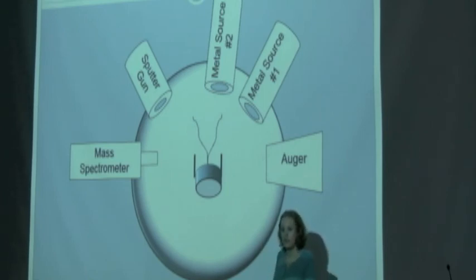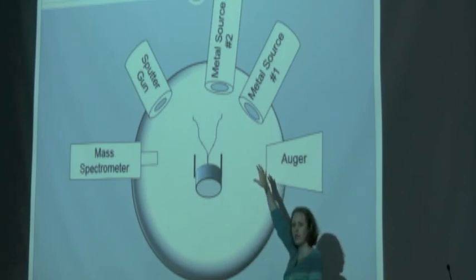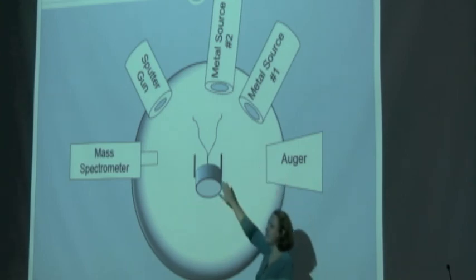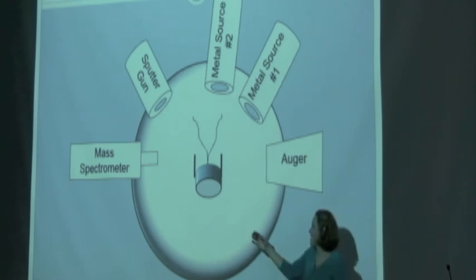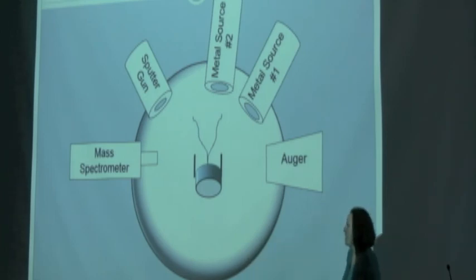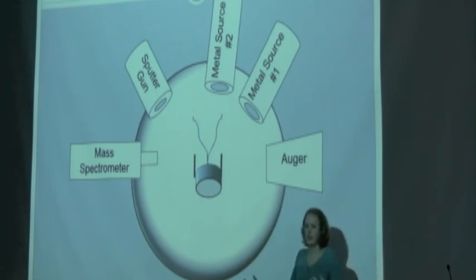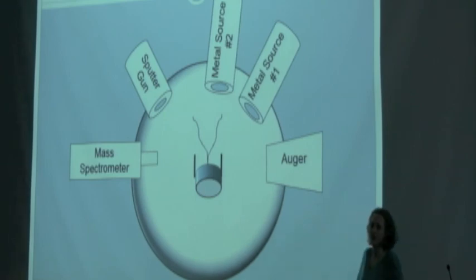We have metal sources where we can deposit individual atoms onto the surface. We have a sputter gun, which is basically—we accelerate atoms and it's basically like a cannon, and it shoots them onto the surface and knocks out other atoms and cleans the surface. And then we have a mass spectrometer so we can look at the masses of everything that comes off of the surface.